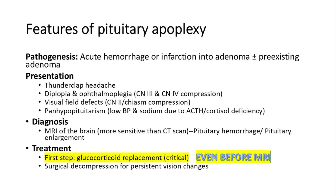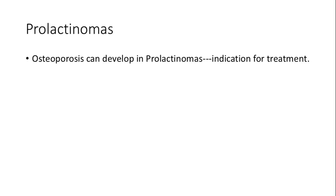Pituitary apoplexy is characterized by acute hemorrhage or infarction into an adenoma. Presentation includes thunderclap headache, visual field defects, and panhypopituitarism. Diagnosis involves MRI of the brain, which is more sensitive than CT scans. The first step in treatment is glucocorticoid replacement, even before MRI, followed by surgical decompression for persistent vision changes. Prolactinomas can lead to osteoporosis, which serves as an indication for treatment.